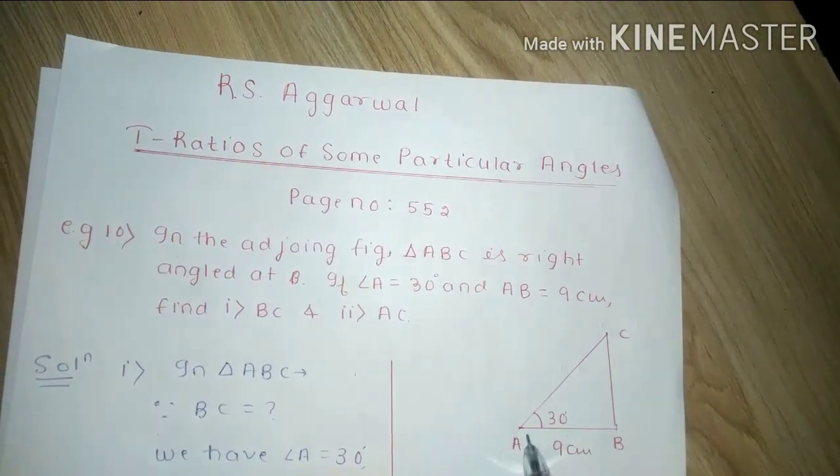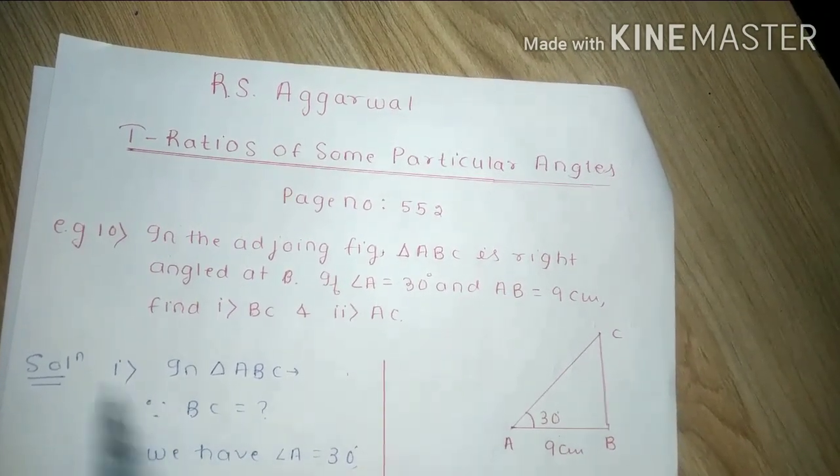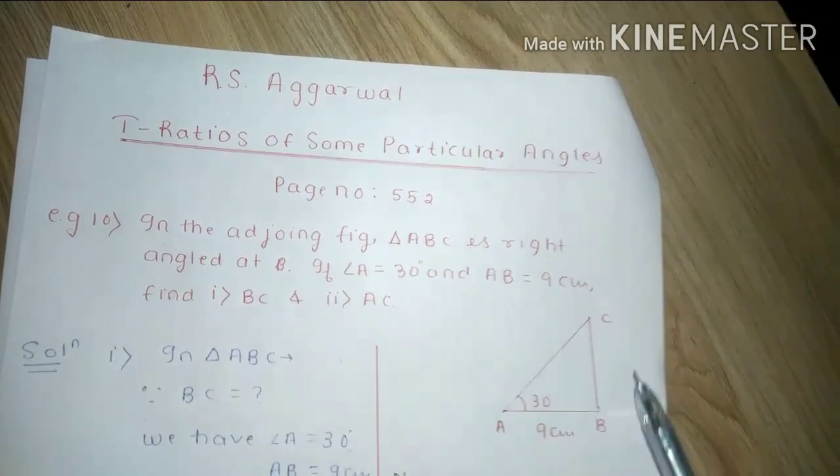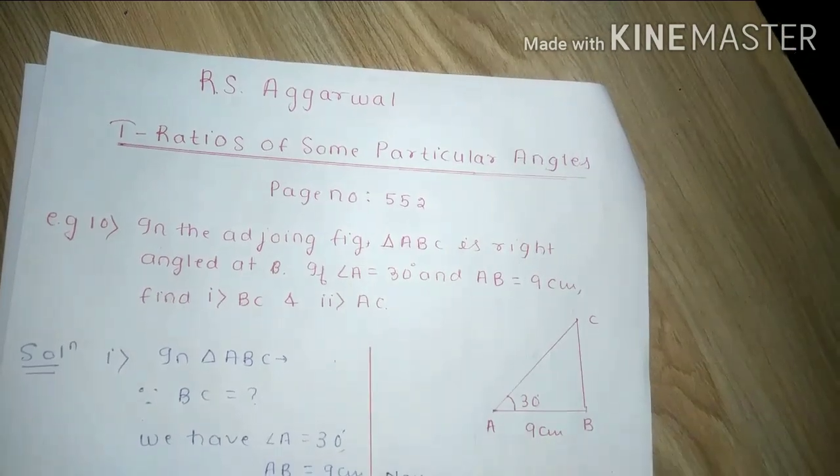If angle A is equal to 30 degrees and AB is equal to 9 cm, find BC and AC.